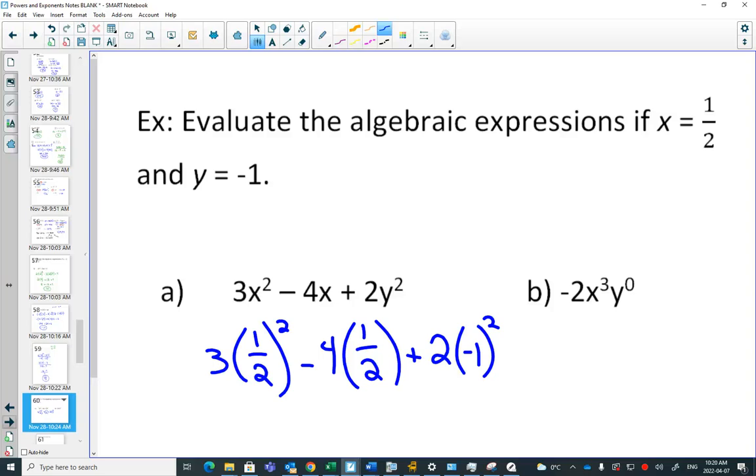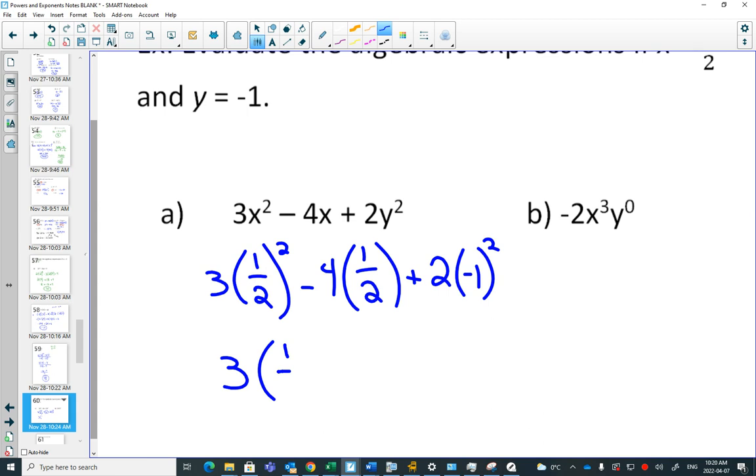So 1 half squared means 1 half times 1 half. It's going to be 1 quarter. We're on to fractions now. There's no exponents here, so we'll leave that for now. Here we have another exponent. Negative 1 squared. Is just the negative 1 or both the negative and the 1 included? It'll be just the negative 1 or both the negative and the 1. That gets squared. And negative 1 times negative 1 is 1.